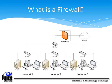A firewall is a system or group of systems that enforces an access control policy between two networks. The actual means by which this is accomplished varies widely, but in principle, the firewall can be thought of as a pair of mechanisms — one to block traffic and one to permit it. Probably the most important thing to remember about a firewall is that it implements an access control policy. If you don't have a good idea what kind of access you want to allow or deny, a firewall really won't help you. Administrators for firewalls that manage connectivity for a large number of hosts therefore have a very heavy responsibility.